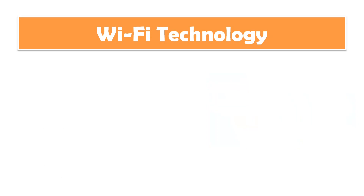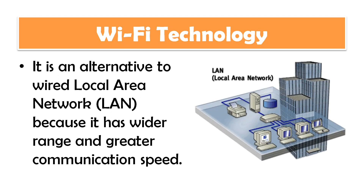Now, in the same way that Bluetooth works on a personal area network, you can make use of Wi-Fi technology for data transmission in a local area network. A local area network is a network established within an office building — on multiple floors, in different places, with many computers connected. Although it can also be wired, a wireless network provides greater communication speed and reduces the cost of cabling.